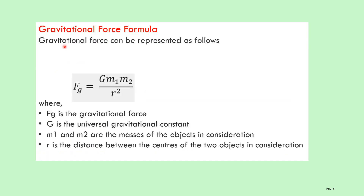The gravitational force formula is: Fg = G·M1·M2 / R², where G is the universal gravitational constant, M1 and M2 are the masses of the objects under consideration, and R is the distance between the centers of the two objects. Gravitational force is directly proportional to the product of the masses, and inversely proportional to the square of the distance between the objects.